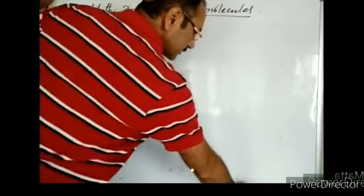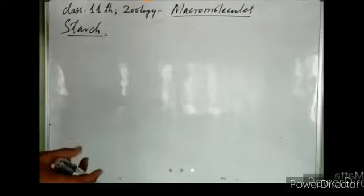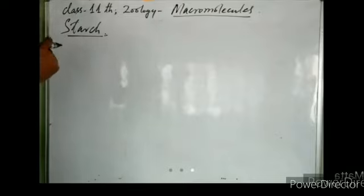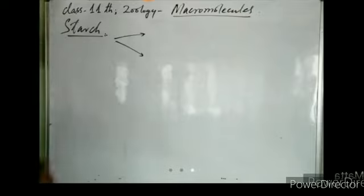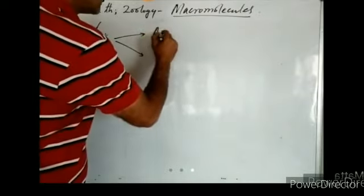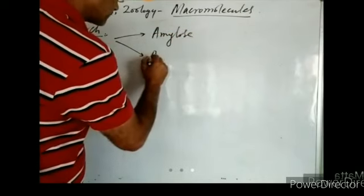Where do we find starch? Food items like wheat, rice, banana, and potato are rich in starch. A starch molecule is formed of two components: amylose and amylopectin.